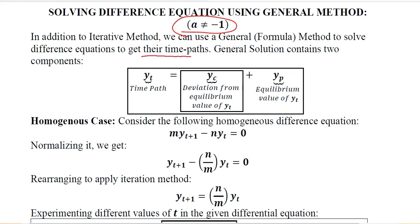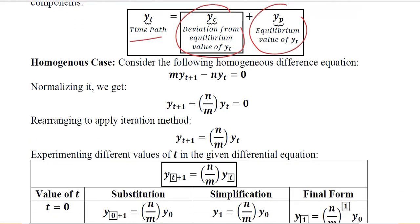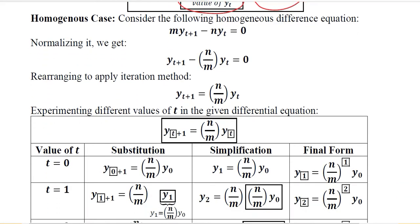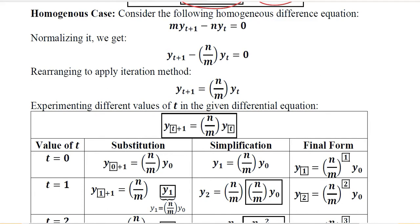The purpose behind developing a formula is to come up with a time path, which is the solution of the given difference equation. Recalling the components of the time path: there will be a deviation component and an equilibrium value. We start with the homogeneous difference equation, which will give us a form we can further use, because the general solution of a homogeneous case is actually the complementary function for the non-homogeneous case.